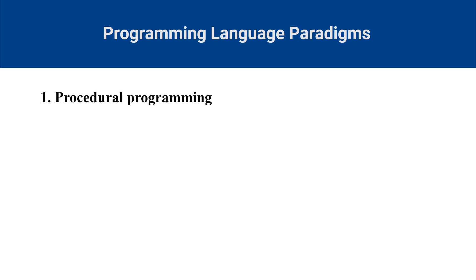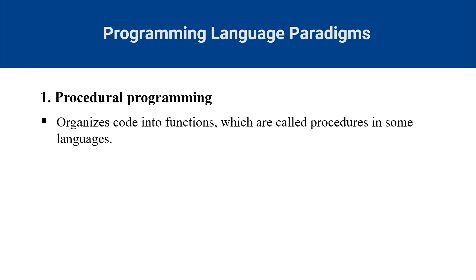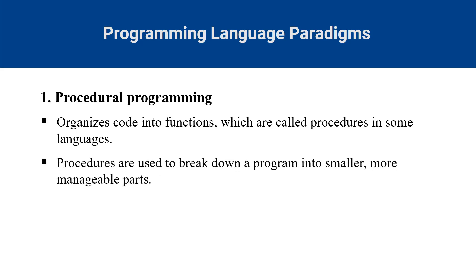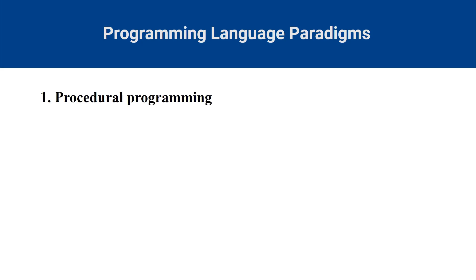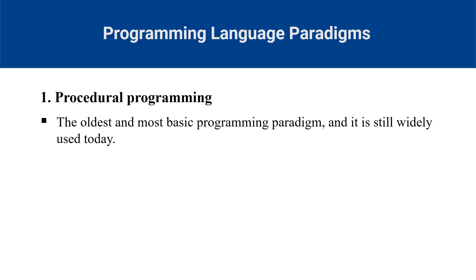Procedural programming is a programming paradigm that organizes code into functions, which are called procedures in some languages. Procedures are used to break down a program into smaller, more manageable parts. Procedural programming is the oldest and most basic programming paradigm and is still widely used today. Examples of procedural programming languages include C, Pascal and Fortran.